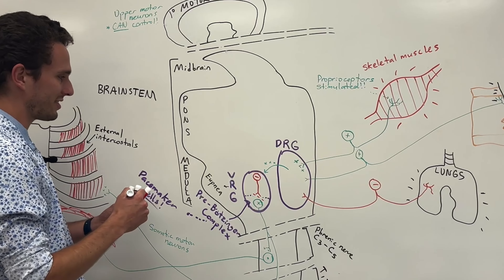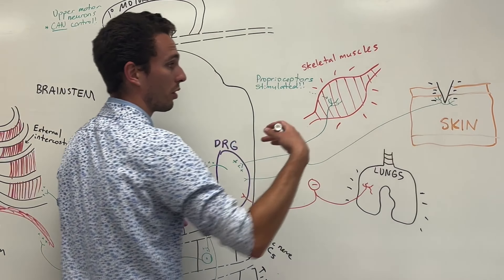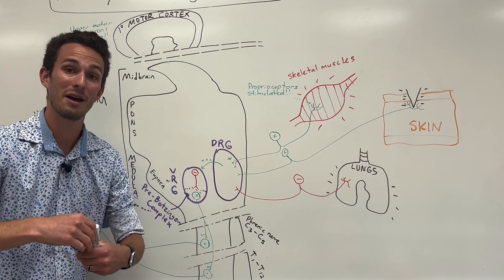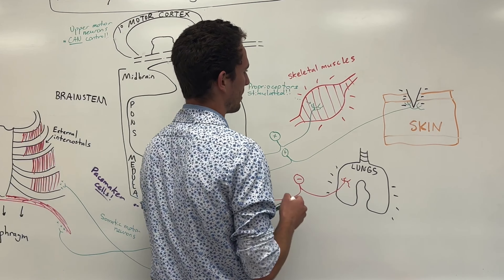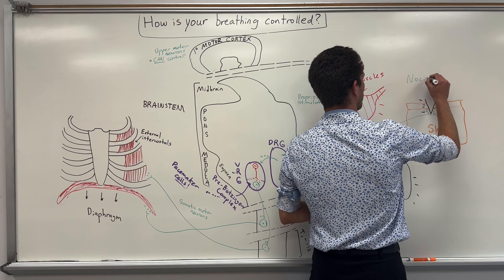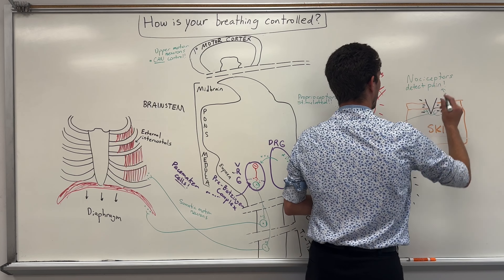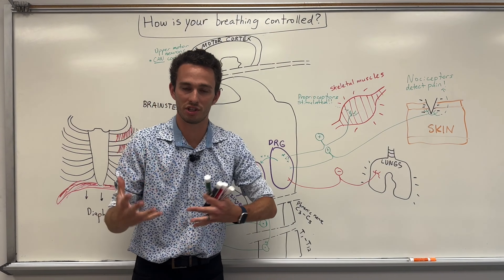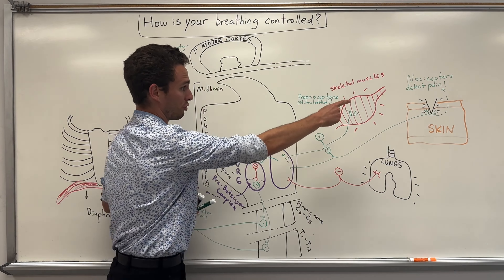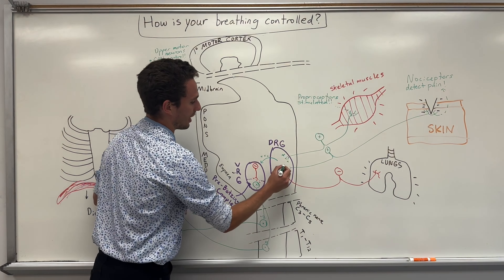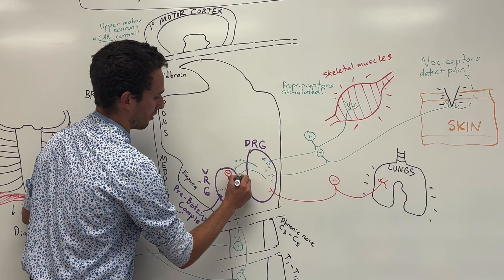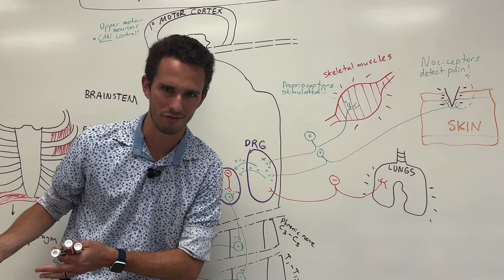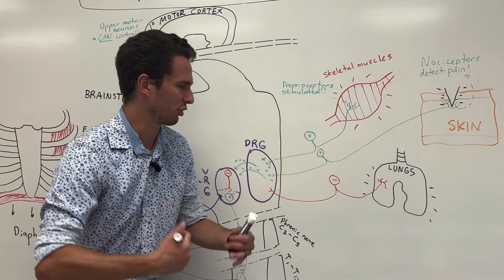At the same time, say we have some sort of damage — skin damage, a muscle tear, or some sort of drastic painful stimulus. We will have pain receptors, also called nociceptors, that can directly detect painful stimuli. If you are in pain, there's some sort of stressful stimulus going on, and that will directly communicate with the DRG and say we need to increase that respiratory rate because something dangerous is nearby. It's almost an example of a fight-or-flight response — increases respiratory rate.